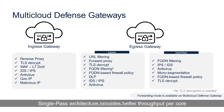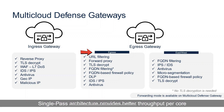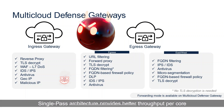Some of the capabilities we provide: on the ingress gateway — reverse proxy, TLS decrypt, web application firewall, L7 DoS, IDS/IPS, antivirus, geo IP, and malicious IP. On the egress side, we centralize the gateway to provide URL filtering, forward proxy, TLS decrypt, FQDN filtering, FQDN-based firewall policy, data loss prevention, IDS/IPS, and antivirus. For east-west, we get FQDN filtering, IPS/IDS, antivirus, micro-segmentation, FQDN-based firewall policy, and TLS decrypt — all driven through a single-pass architecture.